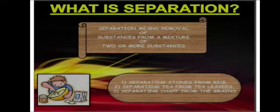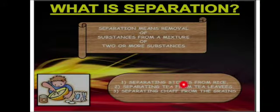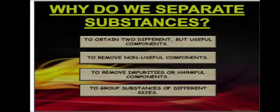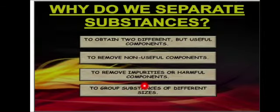Before starting the chapter, we should know what separation is. Separation means removal of substances from a mixture of two or more substances — for example, removal of stones from rice, tea from tea leaves, and chaff from grains. We need to separate substances to obtain useful components, remove non-useful or harmful components, and to group substances of different sizes.